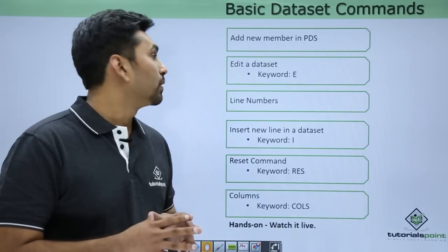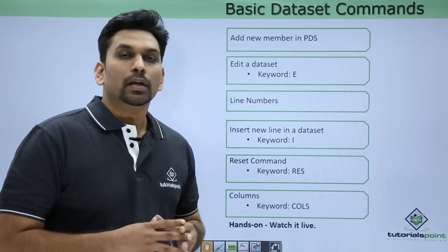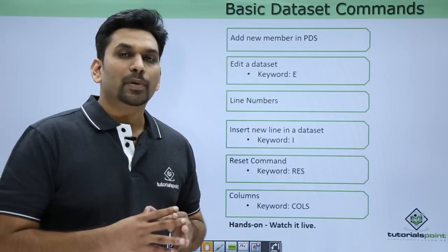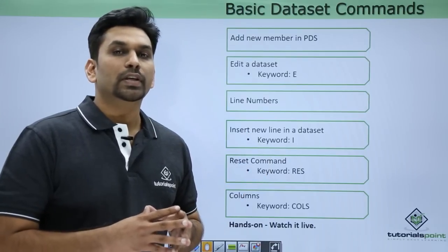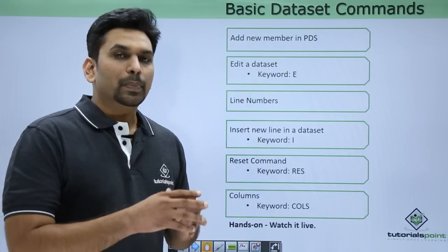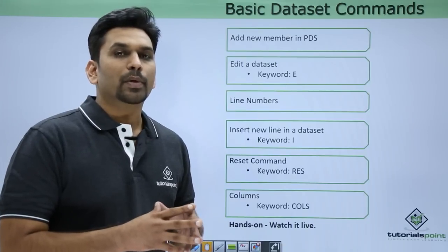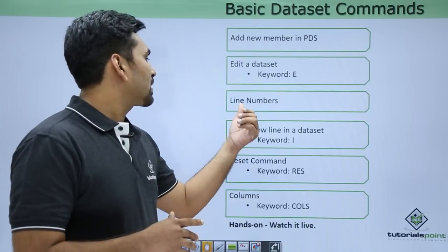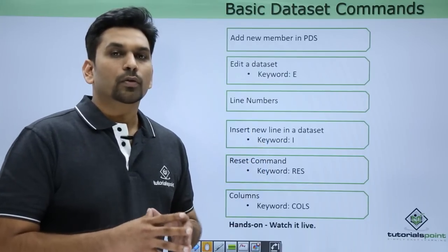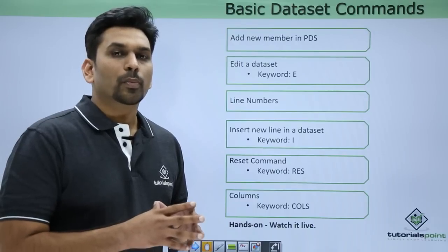The next is editing a dataset. The keyword is E for PS and PDS members. We use the E command to open a member in edit mode — simply type E in front of it and press Enter; it will open the member in edit mode. Line numbers come on the left hand side of a PS or PDS member and they are automatically generated.